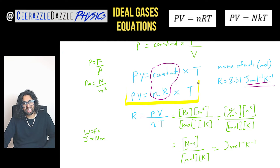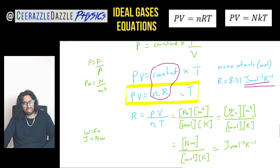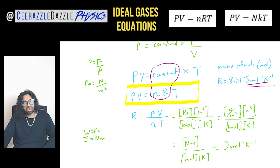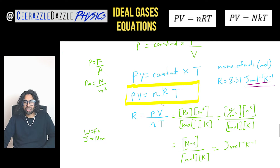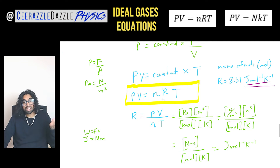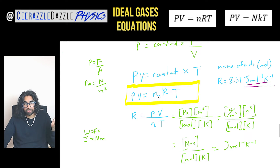So our first formula is PV = nRT, where lowercase n is the number of moles, R is the molar gas constant, and T is temperature in Kelvin. Now we're going to look at how we get the second formula with a capital N — where does that come from?